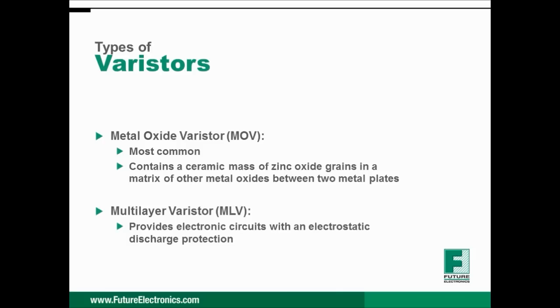A metal oxide varistor, or MOV, is the most common type of varistor and contains a mass of zinc oxide grains that are in a matrix of other metal oxides, sandwiched between two metal plates acting as the electrodes.